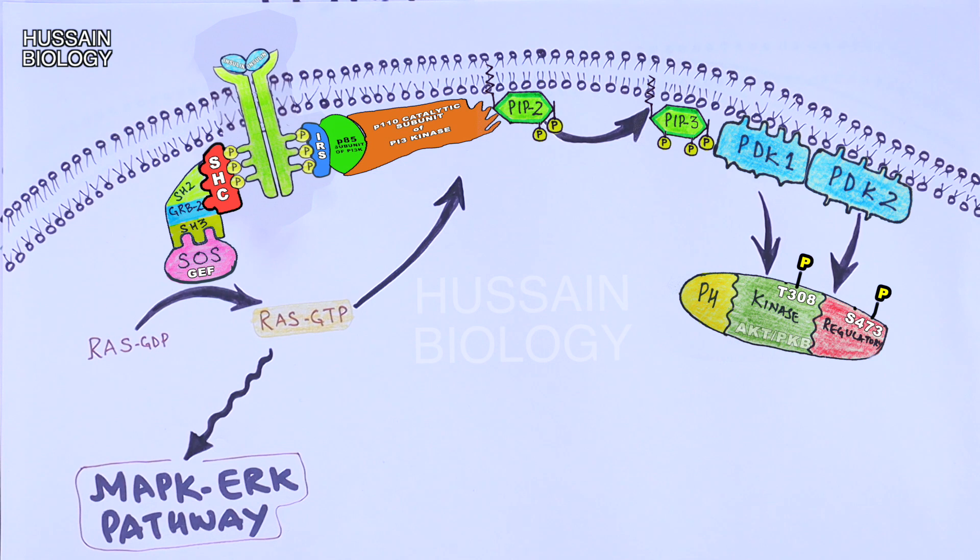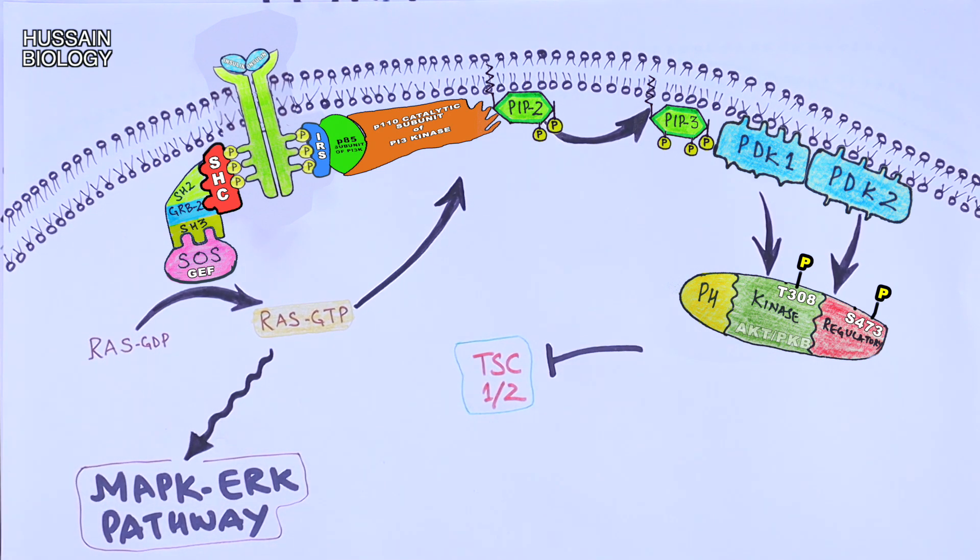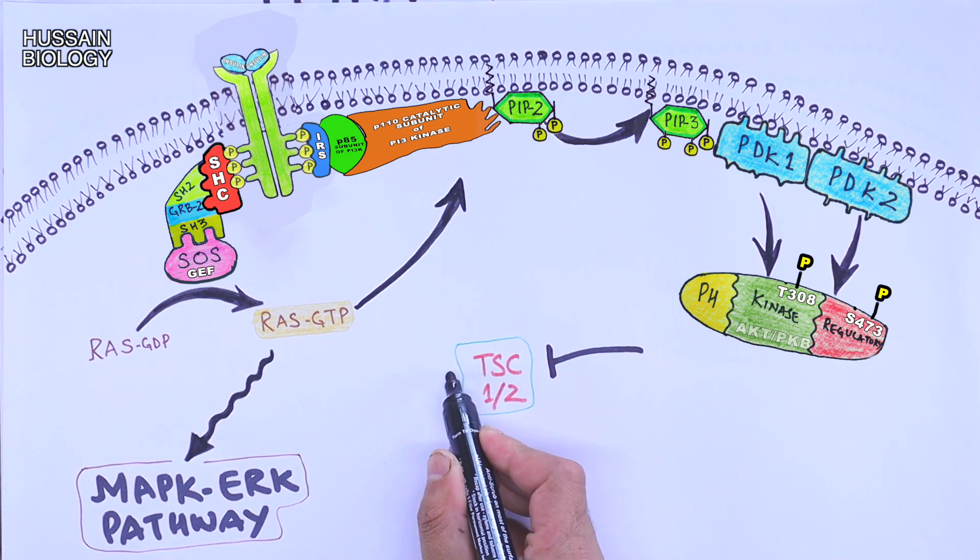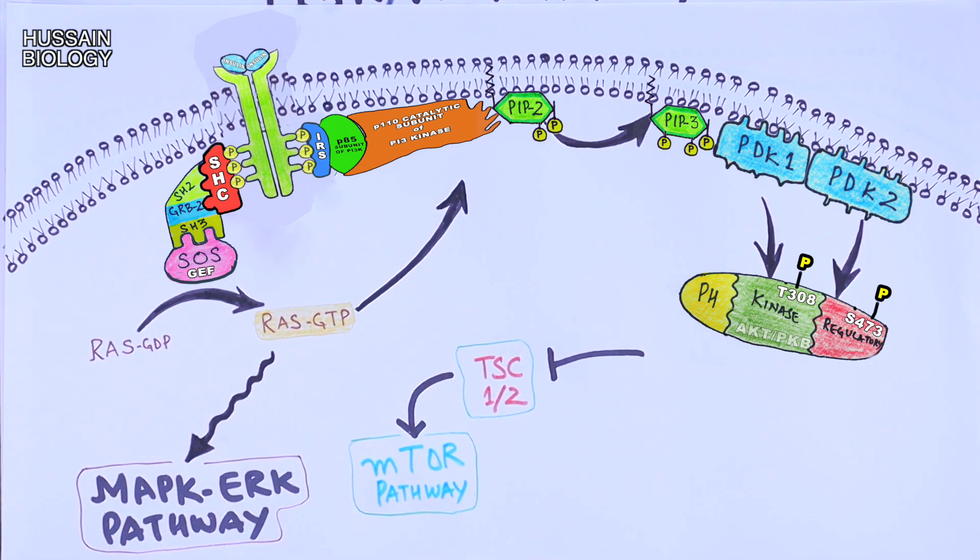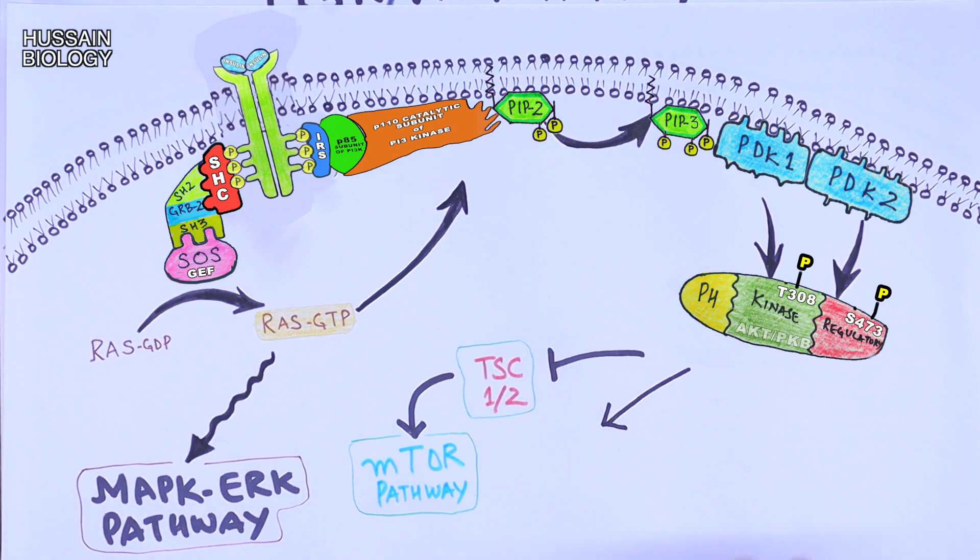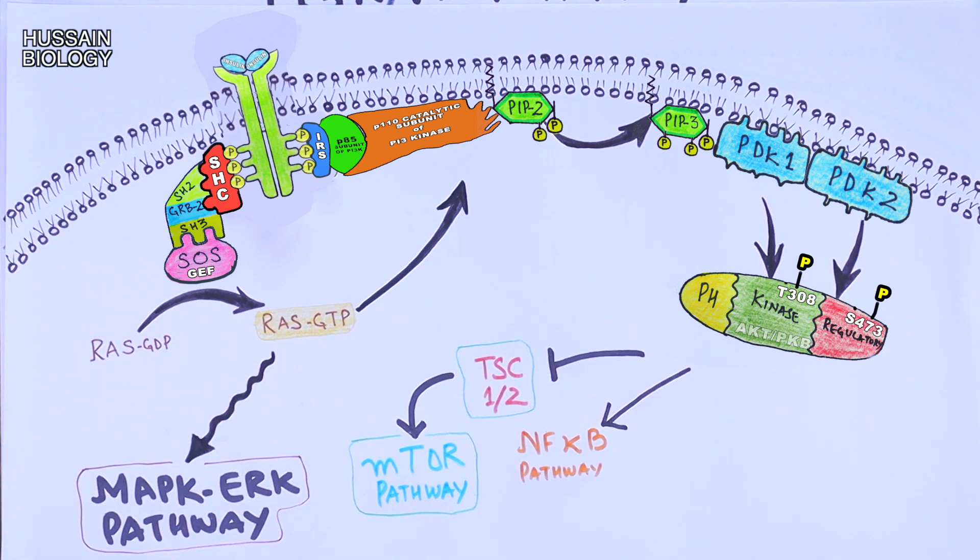This active AKT or PKB protein can lead to numerous pathways. First we see the AKT can act on TSC2 or TSC1 protein. The AKT PKB molecule inhibits the TSC2 protein, and the inhibition of TSC2 protein can activate the mTOR pathway. Then this AKT or PKB molecule also can drive the NF-κB pathway. The AKT can activate the IKKα through phosphorylation, and this IKKα then drives the NF-κB pathway.